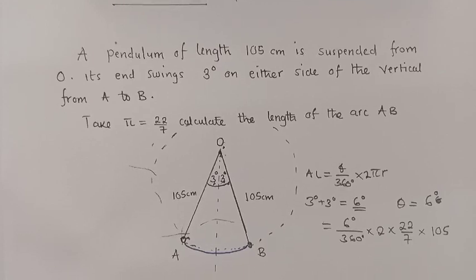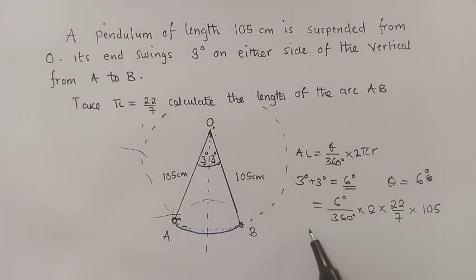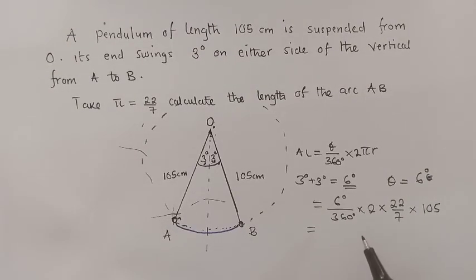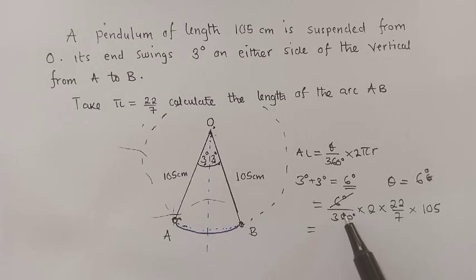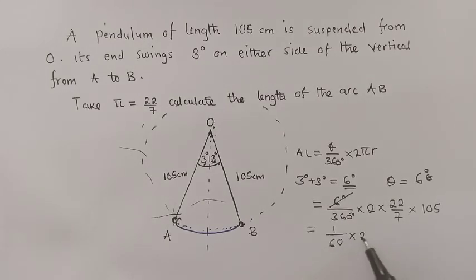is 105. Now we can either use our calculator or we just solve. Six into 360, here to be 1 and here to be 60, times 2 times 22 over 7 times 105.